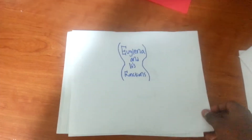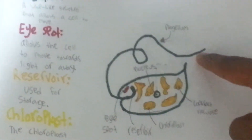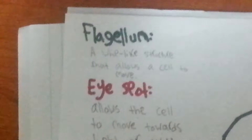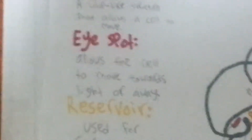So now we will be discussing its functions and about the euglena itself. So right here, I have drawn another one. And that is the flagellum, that is the nucleus, that is the red eye spot, that is the reservoir, that is the chloroplast, that is the contractile vacuole. The eye spot allows the cell to move towards light, or away from light, depending on it.